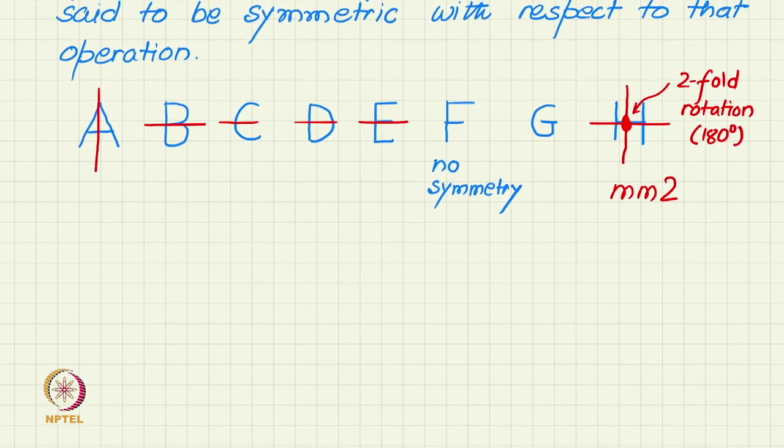But let us take a more interesting example now, that is of a square. Intuitively we know that a square is highly symmetric. But by the definition of our symmetry, just like we have seen now, we see that it has a horizontal mirror and a vertical mirror, just like the letter H. But apart from this, it also has two diagonal mirrors which the letter H was not having. So in that sense, it is even more symmetric than the letter H.